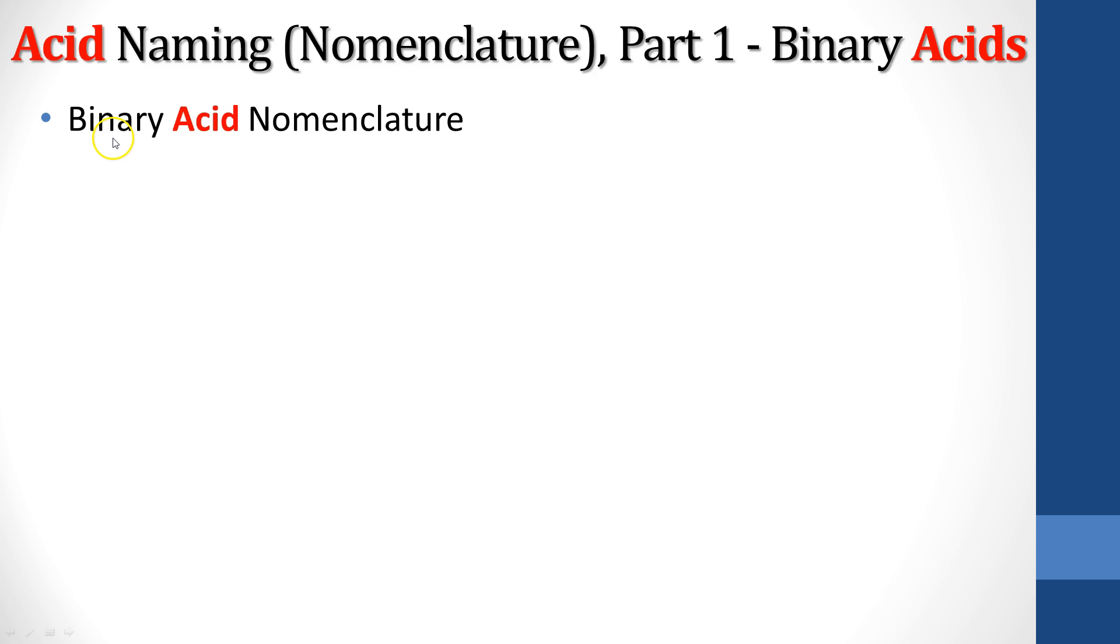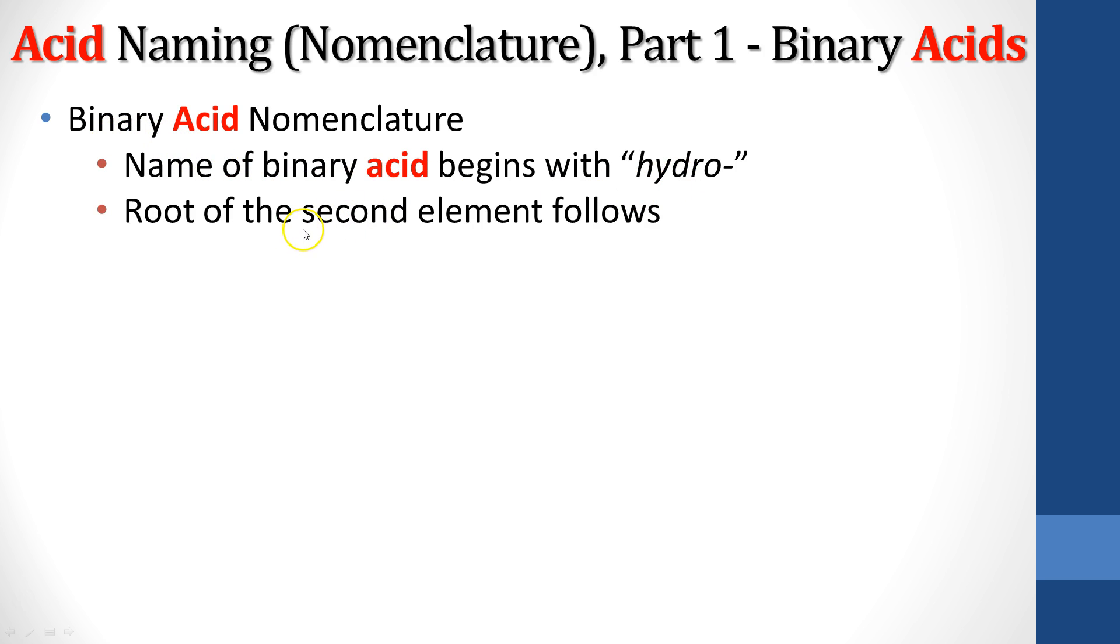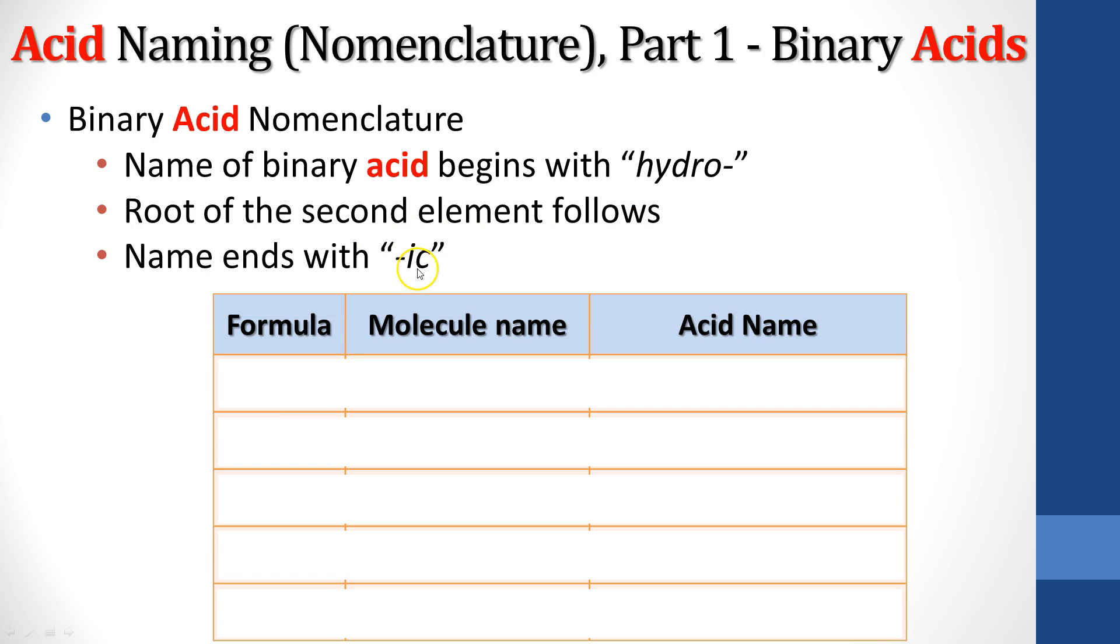Let's talk about how we name them. When it comes to the nomenclature, the naming, binary acid nomenclature always starts with hydro. The root of the second element is going to follow and it's going to end with -ic. Let's take a look at some examples. HF is hydrogen fluoride if we were to just name it by its name. But we put hydro at the beginning, then fluor or fluoride or fluorine, and then we're going to add -ic. So that HF is hydrofluoric acid.